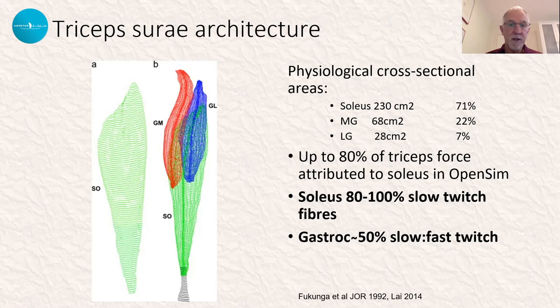Soleus is between 80% and 100% slow-twitch fibres, and gastrocnemius about 50% or so. Perhaps this has greater implications than we probably appreciate to date.